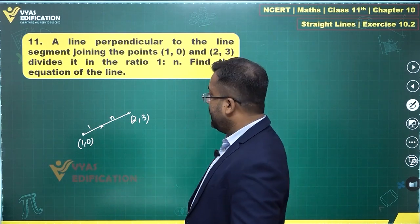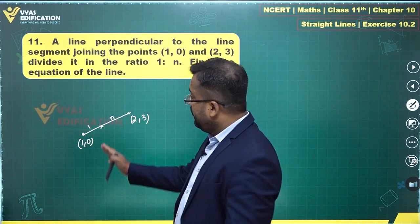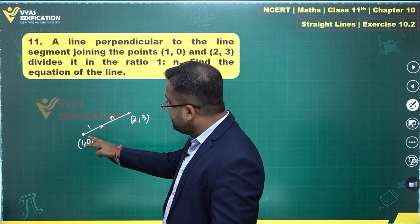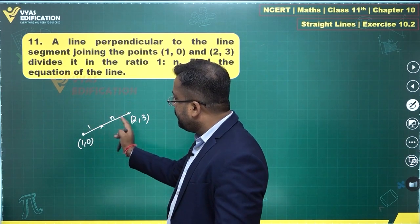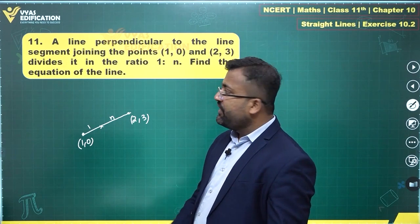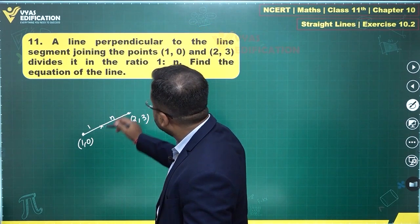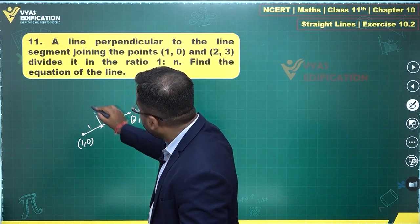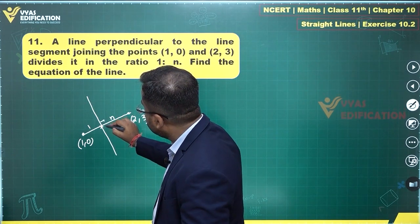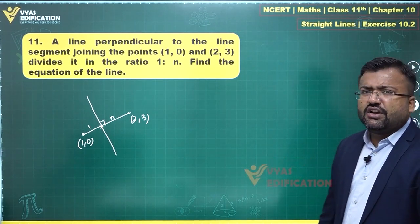That's the convention that we use. Line divides the join of this and this in the ratio 1 is to n, therefore 1 will be towards this point (1,0) and n will be towards this point (2,3). Perpendicular to this line, so we have this kind of a line which is perpendicular to this given line. Find the equation of line - that's what we are interested in.